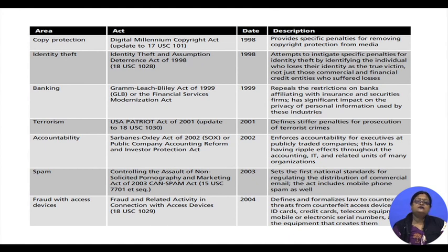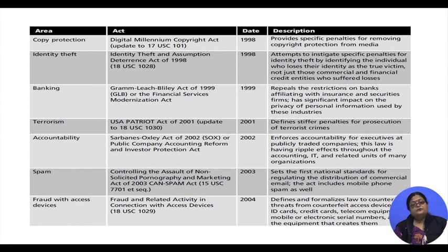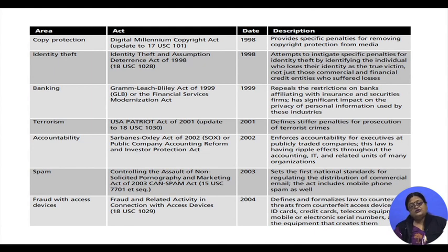Net extortion is where after getting the data there is an illegal threat for a ransom. Phishing involves hacking and taking out confidential information such as from banks, then supplying counterfeit bank web pages where gullible customers key in their financial details.